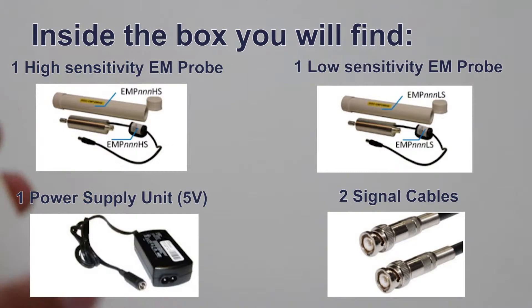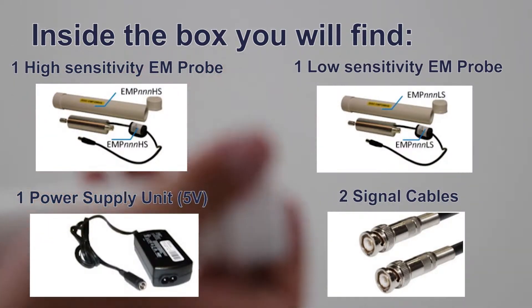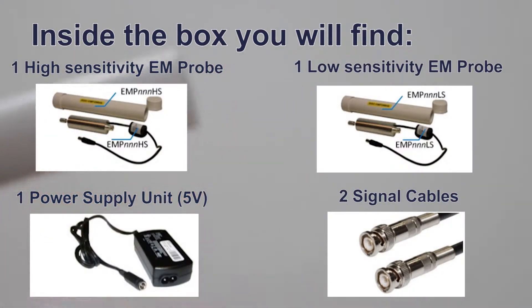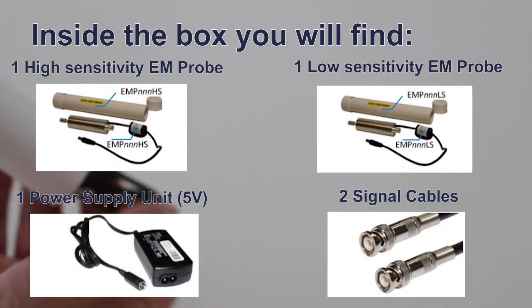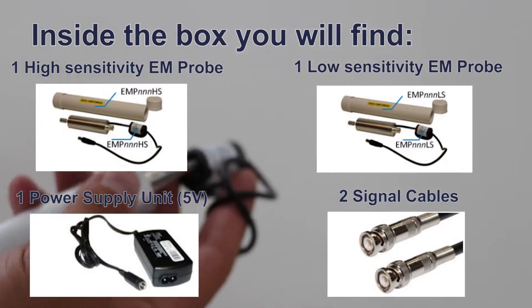Inside the box, you will find one high-sensitivity EM probe, one low-sensitivity EM probe, a power supply unit of 5 volts, and two signal cables.